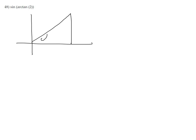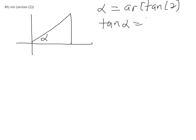Arc tangent lives in quadrant 1, so we set up a quadrant 1 angle. We let alpha equal arc tangent of 2, so tangent alpha equals 2. Tangent is opposite over adjacent, so opposite over adjacent is 2 over 1. With the Pythagorean theorem: 2 squared is four, plus 1 squared is five, square root of that is square root of 5. To the right is positive, up is positive, hypotenuse is always positive.